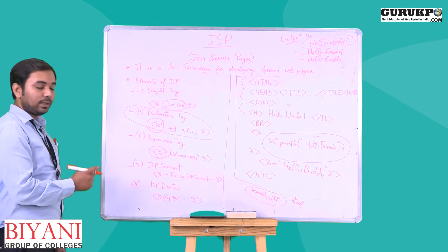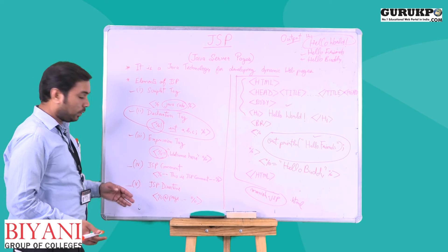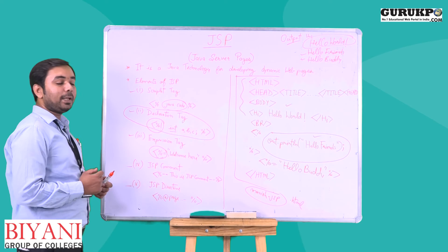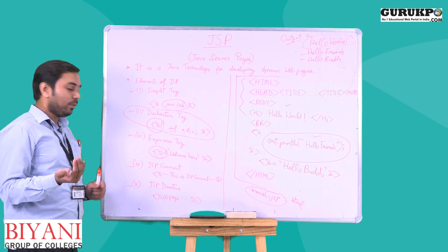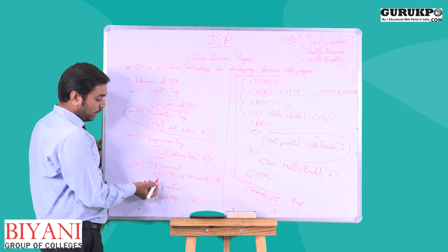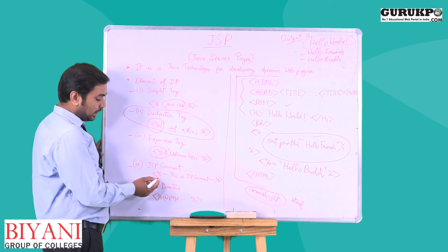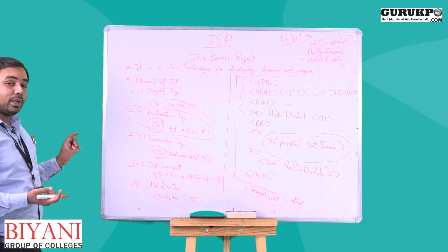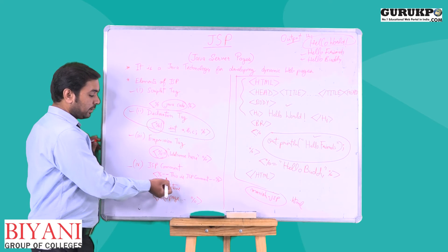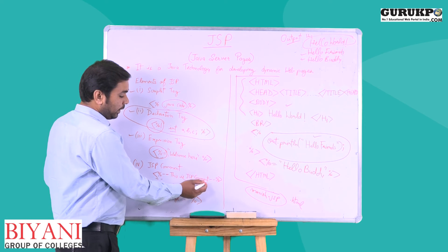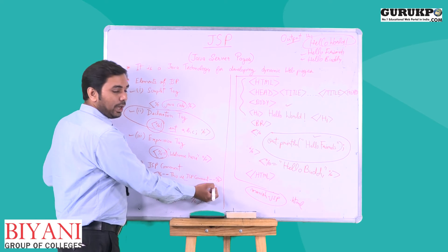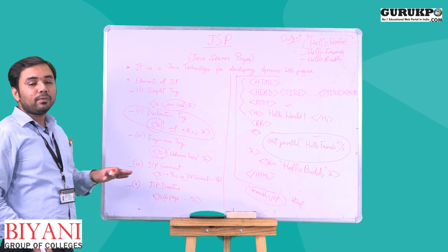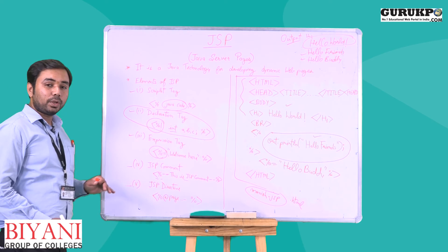These three are very simple elements, and there are two more: JSP comment and JSP directive. For JSP comments, if you want to add a comment you use less-than sign, percentage, then two hyphens, write your comment, then close it with two hyphens, percentage, and greater-than sign. You can use this tag anywhere in your JSP page where you want to add a comment.